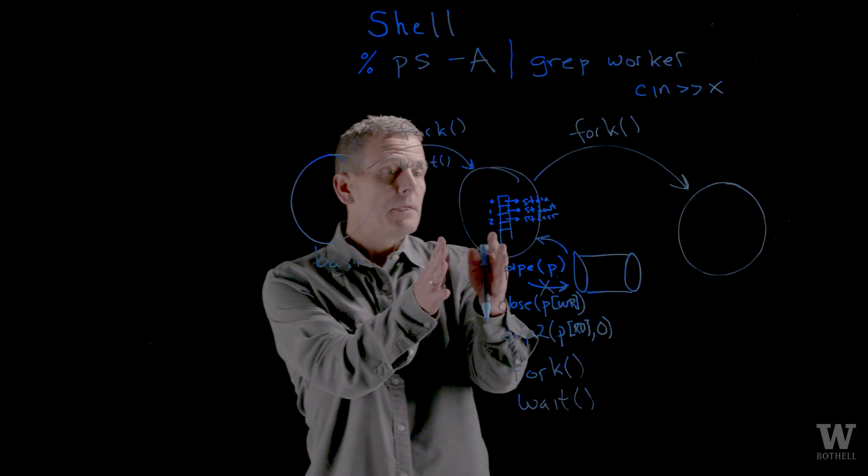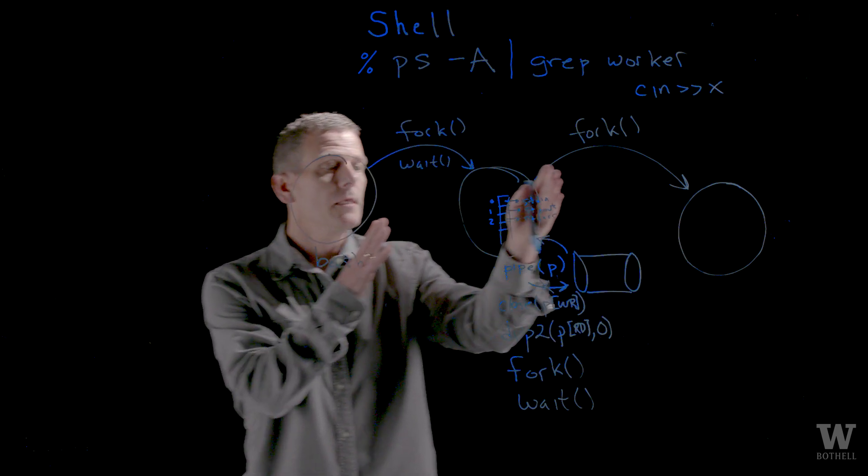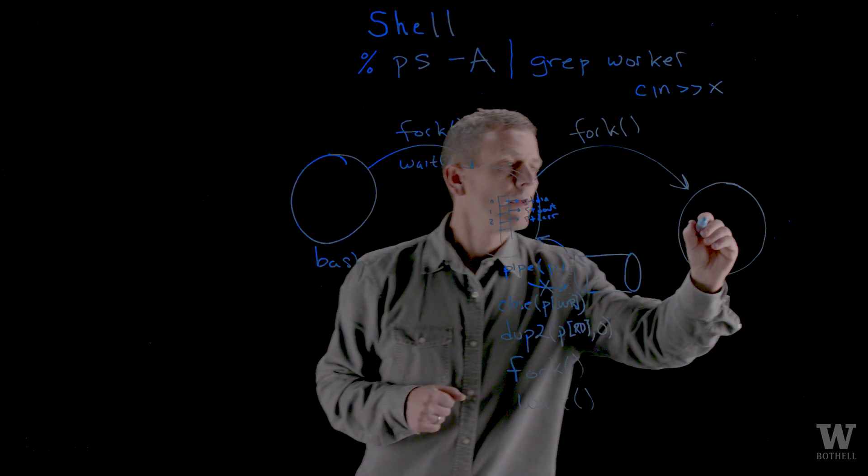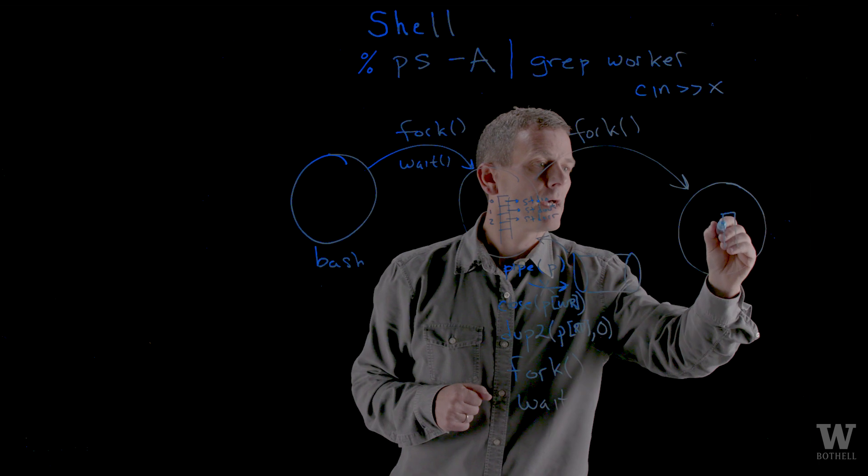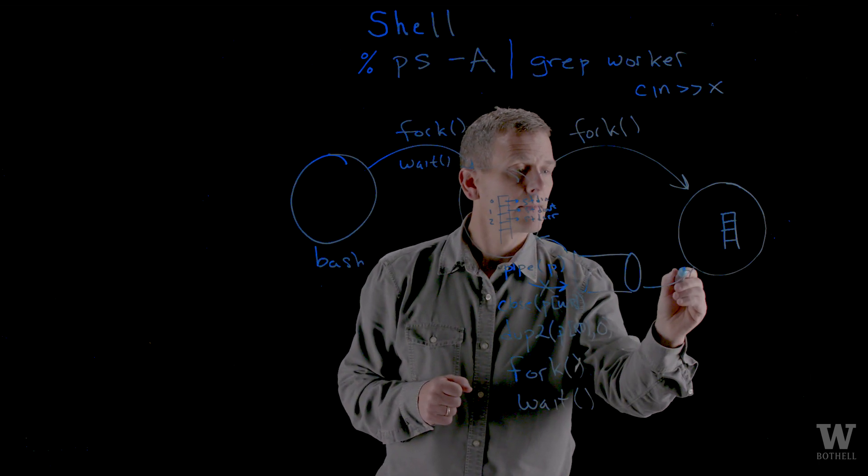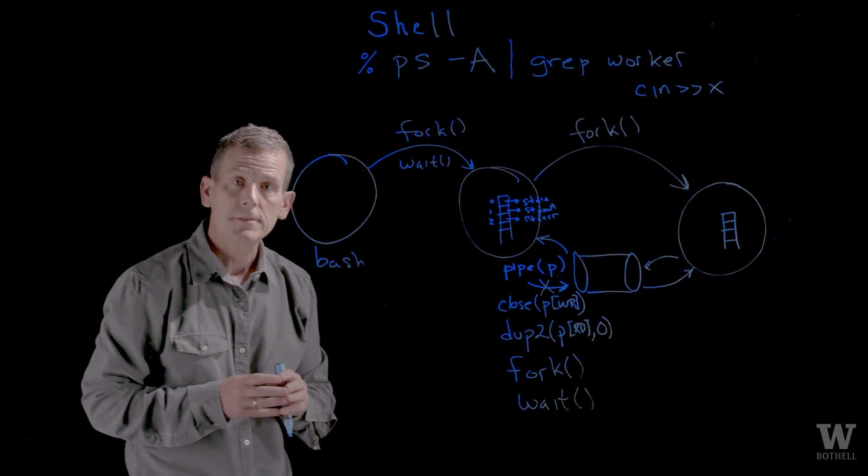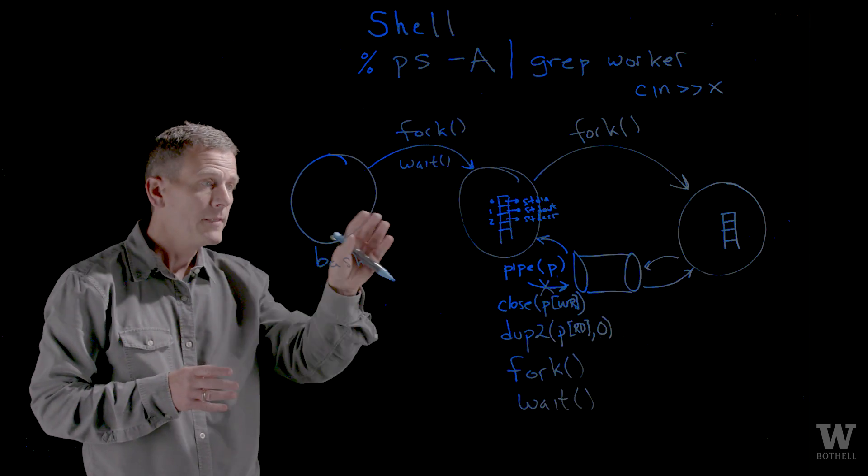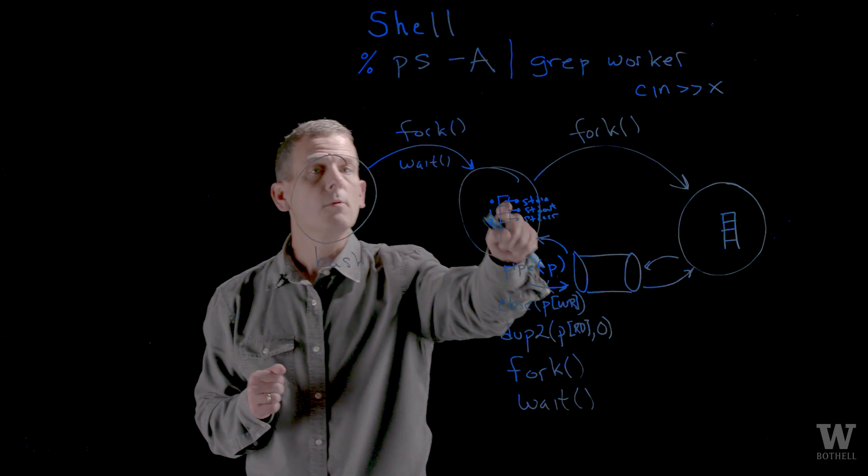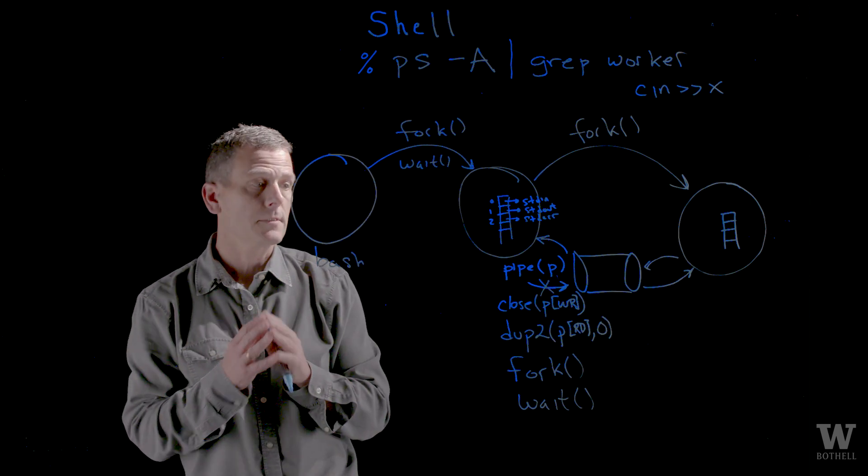Okay. Because the child process is an exact replica of the parent process, the file descriptors get copied over, as well as the pipe. And so now this process has access to the same pipe. In this case, I want my standard out to write to the pipe so it will go into the standard in of the process that's its parent.